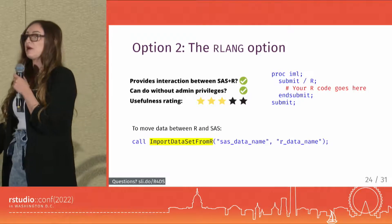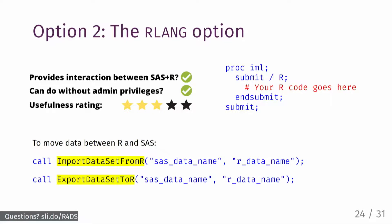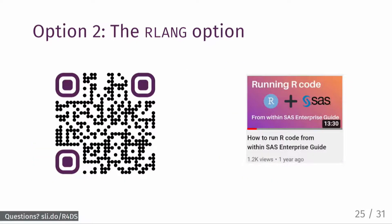It's pretty easy to move data back and forth between R and SAS. If you want to go from R to SAS, use the 'import dataset from R' subroutine. If you want to go in the opposite direction, use the 'export dataset to R' subroutine. Both subroutines use the exact same syntax — start by specifying the name of the SAS data set and then specify the name of the R data frame. I mentioned this option doesn't require admin privileges, but that's only partially true. If you want to use it from base SAS, you don't need admin privileges. But if you prefer an IDE like SAS Enterprise Guide, you will need admin privileges to enable this feature. There's a video on my YouTube channel with full instructions on how to set this up.